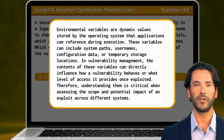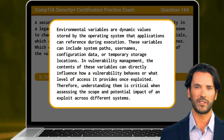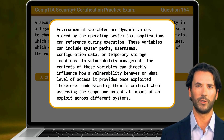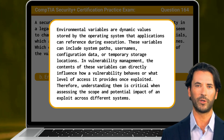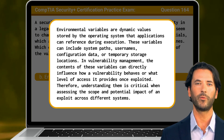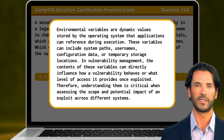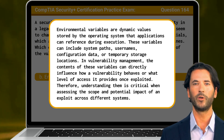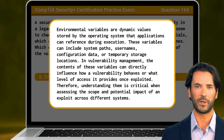Environmental variables are dynamic values stored by the operating system that applications can reference during execution. These variables can include system paths, usernames, configuration data, or temporary storage locations. In vulnerability management, the contents of these variables can directly influence how a vulnerability behaves or what level of access it provides once exploited. Therefore, understanding them is critical when assessing the scope and potential impact of an exploit across different systems.